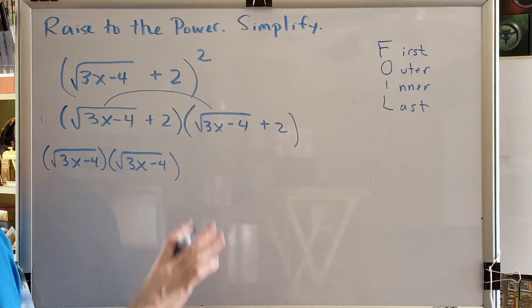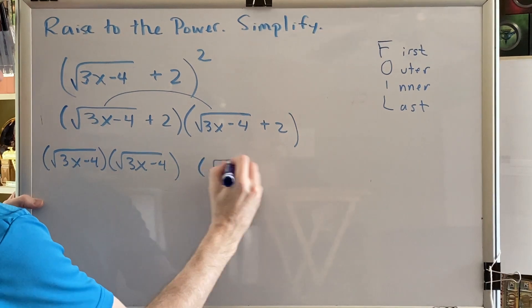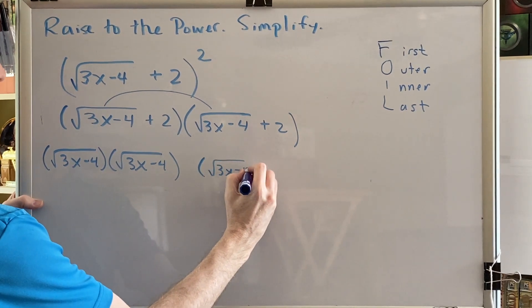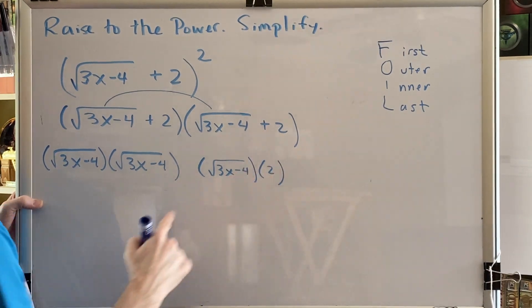Next is outer, the stuff on the outside. That's the radical times the add 2. So I have the square root of 3x minus 4, times 2. Because it was being added, the 2 is listed as positive.